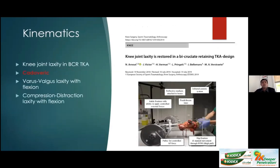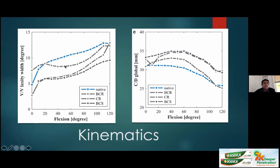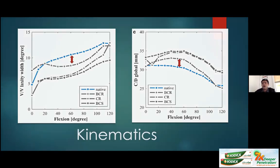A key challenge with bicruciate retaining design is postoperative stiffness, since we still don't fully understand what happens to the ACL and PCL in arthritis. A Belgian cadaveric study examining varus-valgus laxity and compression-distraction laxity found that the bicruciate retaining knee — across various degrees of flexion — is closest to the native knee in both laxity parameters. Cruciate retaining and bicruciate substituting knees perform very differently and unreliably compared to the native knee.